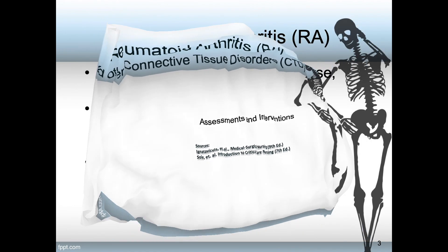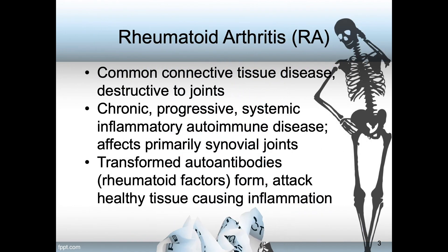Unlike OA, which is usually caused by gravity and wear and tear, RA or rheumatoid arthritis is a common connective tissue disease which destroys the joints. It is a chronic, progressive, systemic inflammatory autoimmune disease that affects primarily the synovial joints. Transformed autoantibodies — that is, rheumatoid factors — form and attack the healthy tissue, causing inflammation.